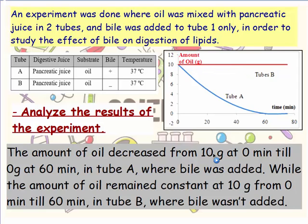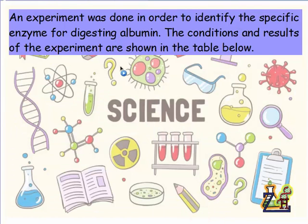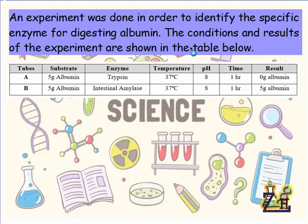Don't forget to write the numbers, to state increase, decrease, or constant, and if comparing, to explain why. Another example: an experiment was done in order to identify the specific enzyme for digesting albumin. Albumin is a type of protein — it is egg white. The conditions and results of the experiment are shown in the table below.